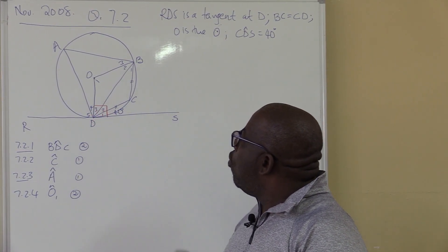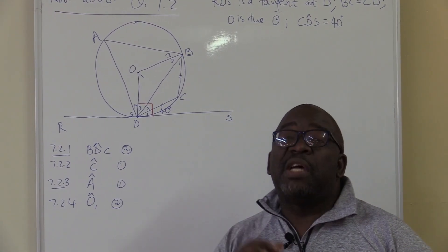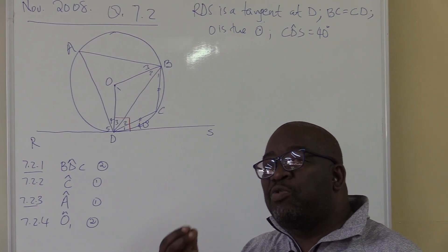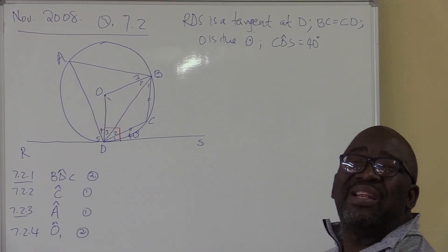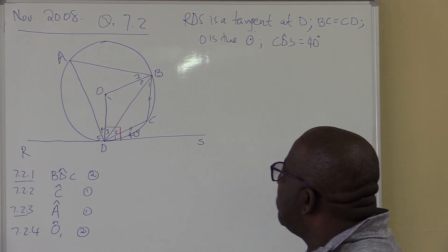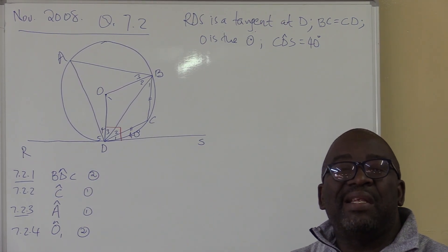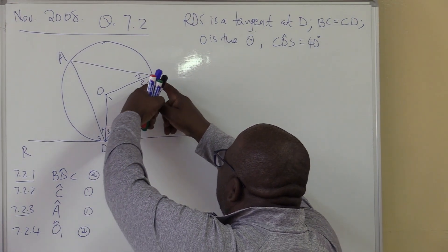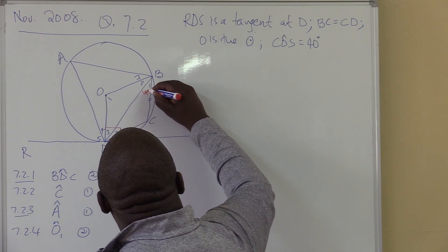D3 and D4 will be 50 degrees since D1 is 40 — the one that we're given. Now the Tan-Chord theorem: whenever the angle between the tangent and the chord equals the angle subtended by that chord in the alternate segment. Do we have a Tan-Chord here? Yes. This angle here is 40 degrees — it is between a tangent and a chord, so it equals the angle subtended by this chord in the alternate segment. That other angle will also be 40 degrees.